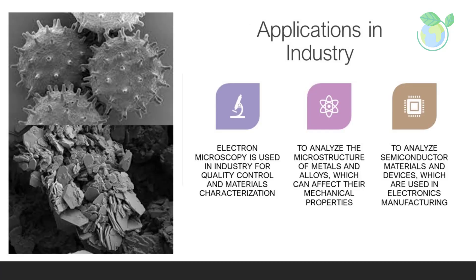Electron microscopy is also used in industry for quality control and materials characterization. For example, electron microscopy can be used to analyze the microstructure of metals and alloys, which can affect their mechanical properties. It can also be used to analyze semiconductor materials and devices, which are used in electronics manufacturing.